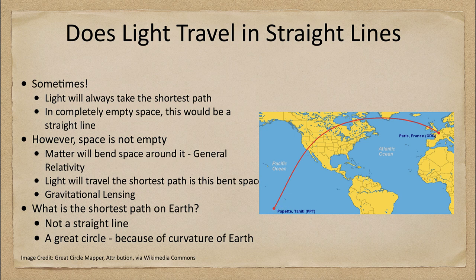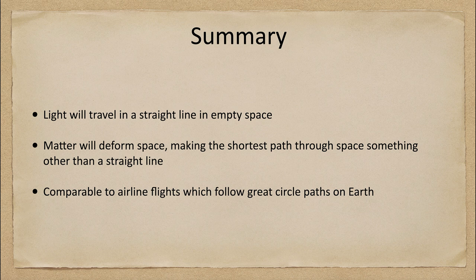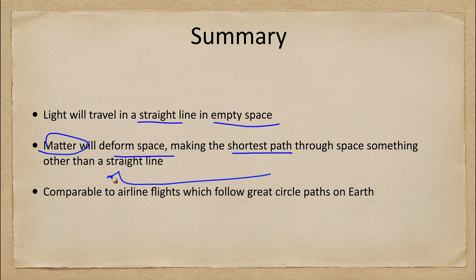So let's finish up with our summary. What we've looked at is that yes, light will travel in a straight line when you're talking about empty space. However, matter deforms space, making the shortest path through our space something other than a straight line. And we compare this to airline flights, which follow a great circle path on the Earth.